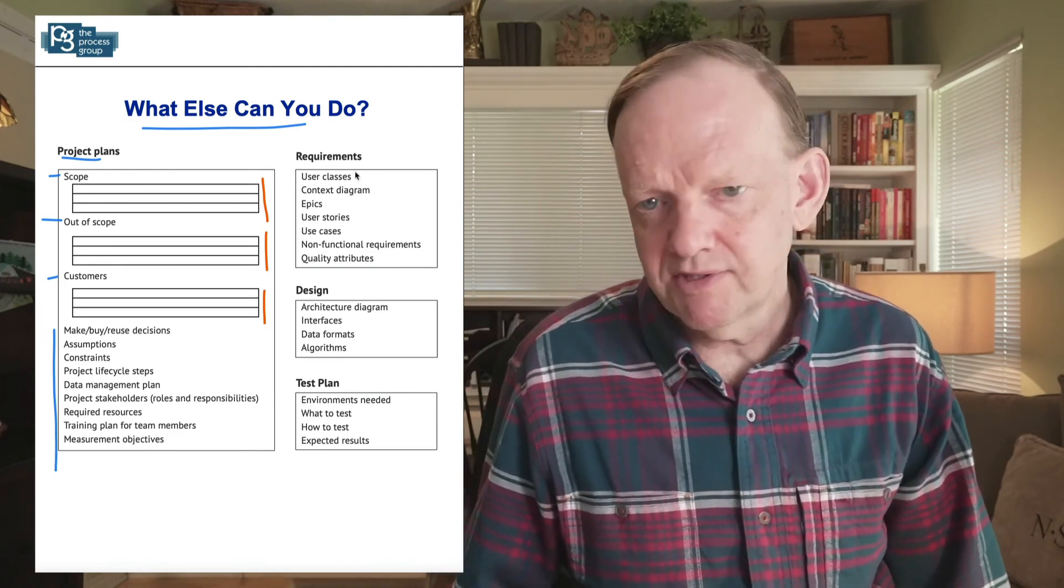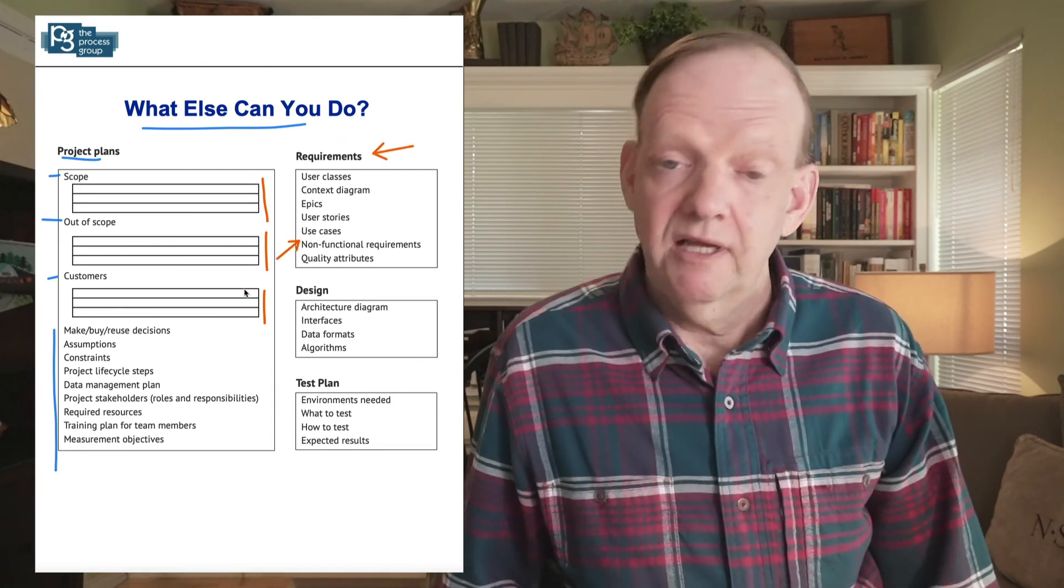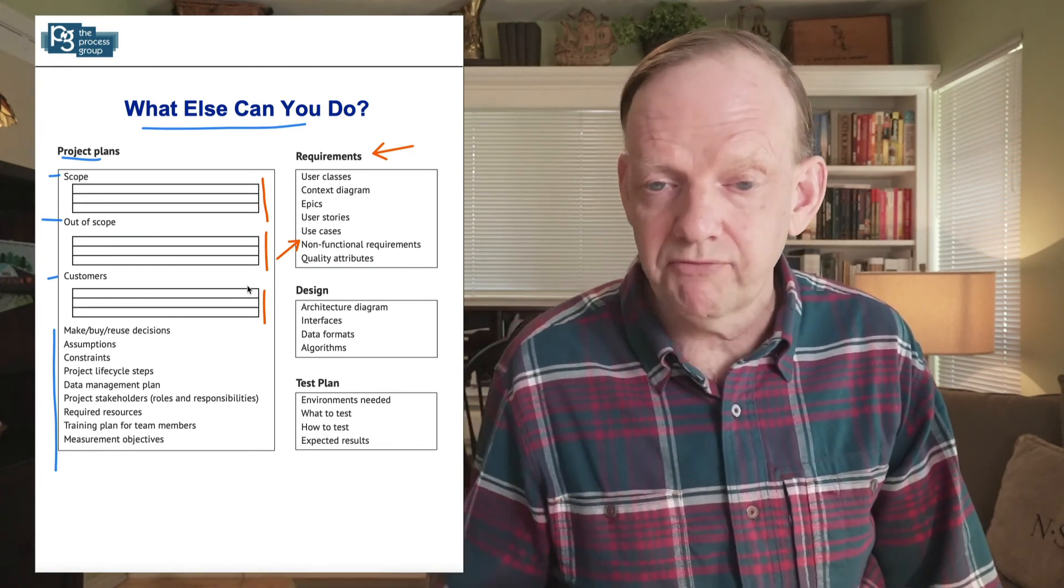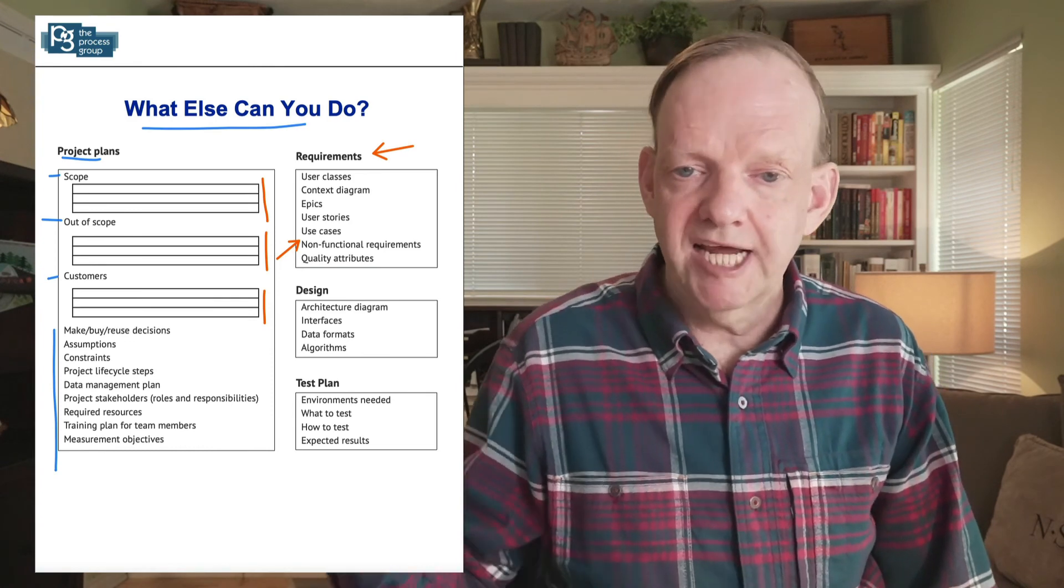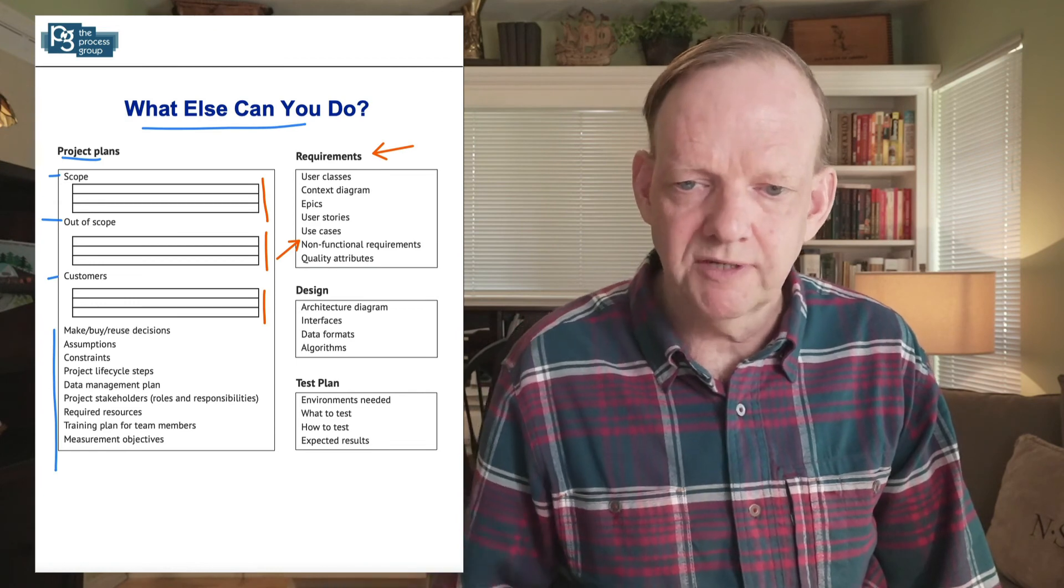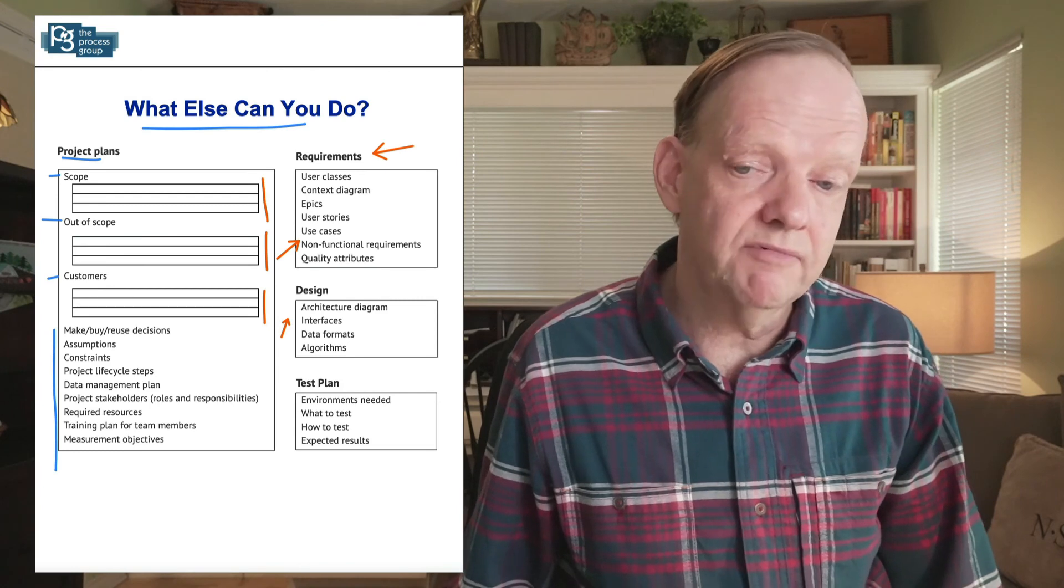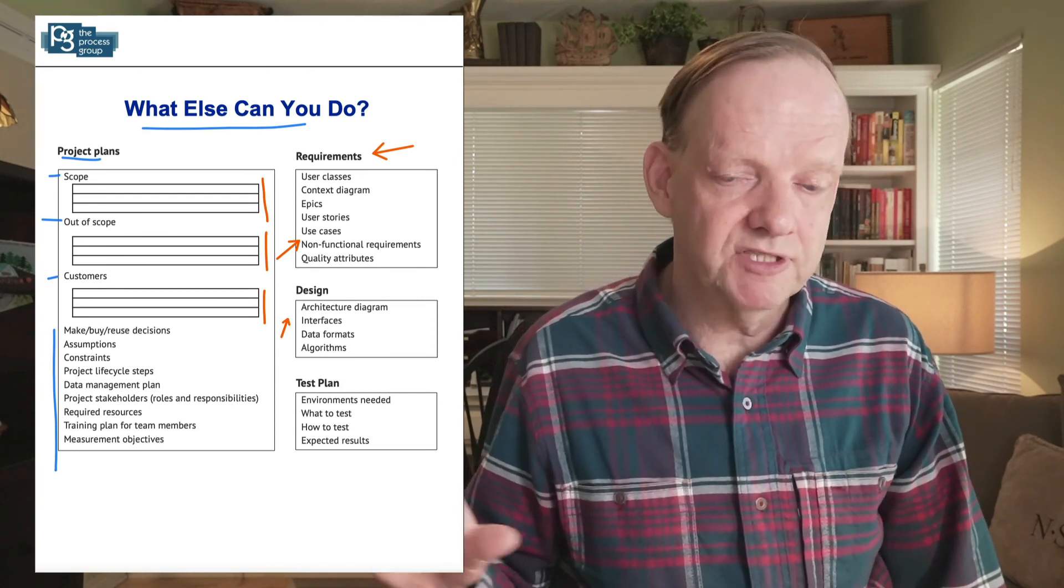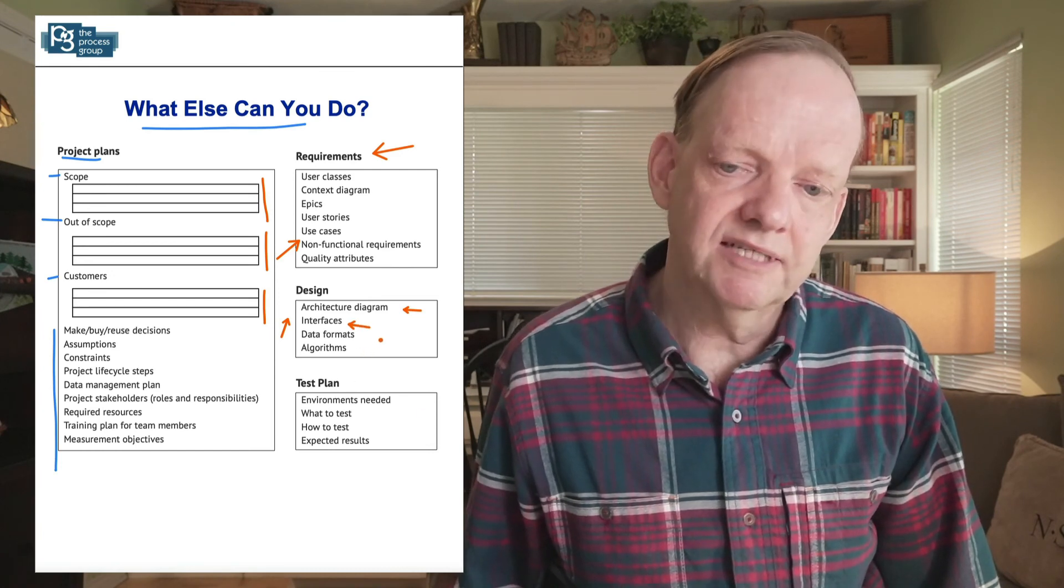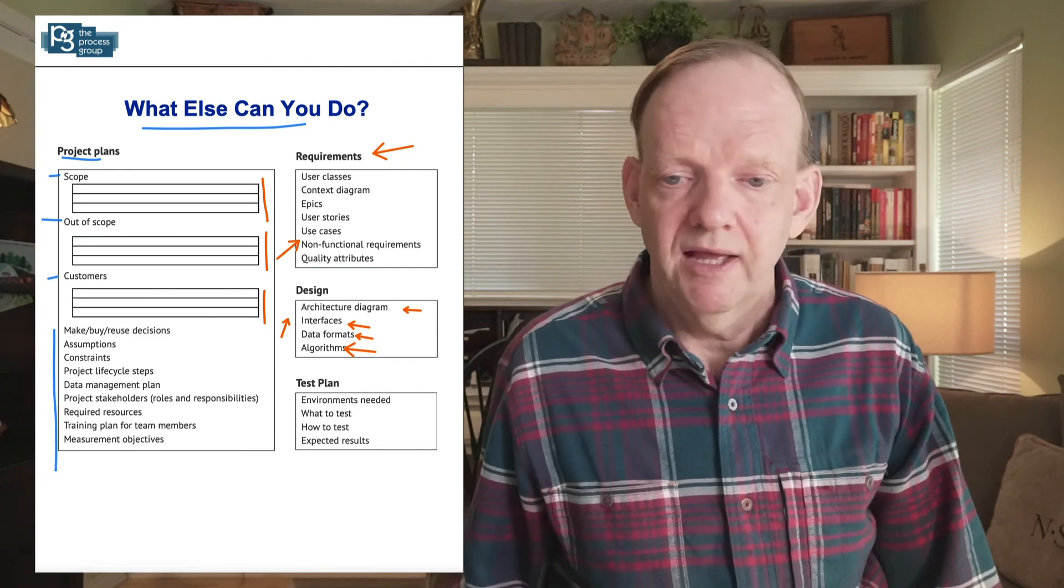And then we have requirements. We have these types of requirements here. These are requirements types. They can all be put into a backlog in a particular tool like Jira or Rally or Confluence. Again, they become tables or entries into the tool. Again, single sentences that are labeled, even design documents. They don't have to be long narrative documents. They can be tables of different types of information, like architecture diagrams, interface lists, data formats, and the way we're going to process data.